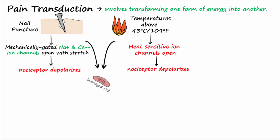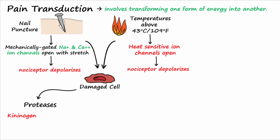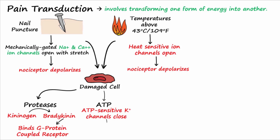Cells that have been damaged release various substances that can depolarize the nociceptor. These substances include proteases, which convert the extracellular peptide kininogen into bradykinin. Bradykinin readily binds to bradykinin receptors, which are G protein-coupled receptors located on the nociceptor, to cause depolarization. ATP can also be released from damaged cells and close ATP-sensitive potassium channels to cause depolarization. Potassium is high inside cells and is released from damaged cells; this elevated extracellular potassium will directly depolarize the nociceptor and bring it closer to threshold.